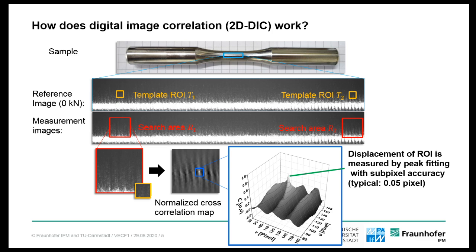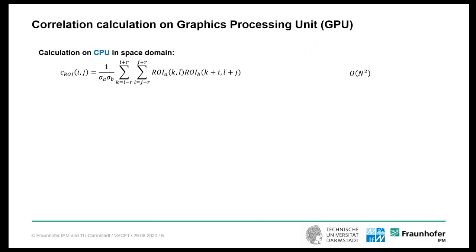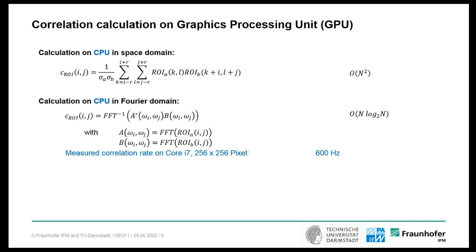For strain control, like a mechanical extensometer, you need at least two regions of interest. For strain field measurements, like in the video, you can have many more. On conventional CPU processors, the DIC speed is limited by the correlation calculation. In space domain, the correlation is an n-squared process. In Fourier domain, it's an n-log-n process. So, for a search area size of 256 pixels, we achieved a correlation rate of 600 correlations per second.